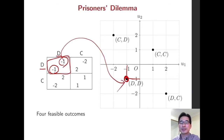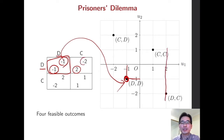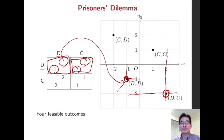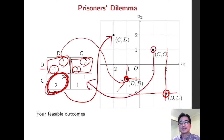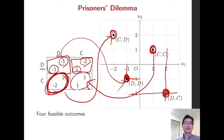If player 1 plays D and player 2 plays C, then player 1 gets 2 and player 2 gets minus 2, so this point corresponds to that outcome. Similarly, we can find the points capturing the payoff levels of the other two outcomes, giving us four corresponding points in this plane.